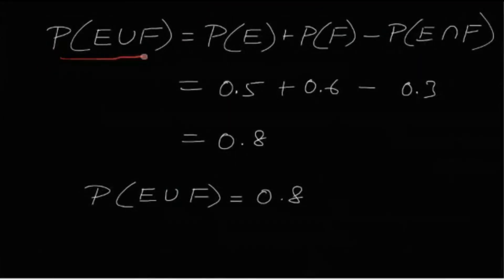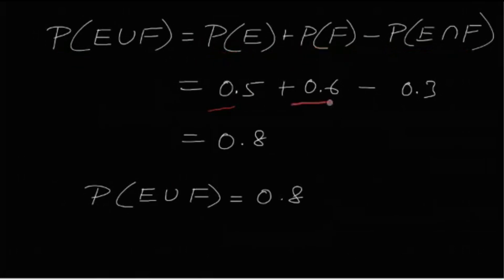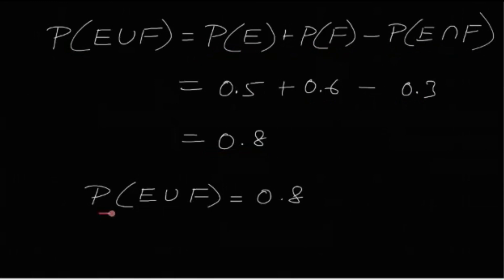P(E ∪ F) = P(E) + P(F) − P(E ∩ F) = 0.5 + 0.6 − 0.3 = 0.8. So P(E ∪ F) = 0.8.